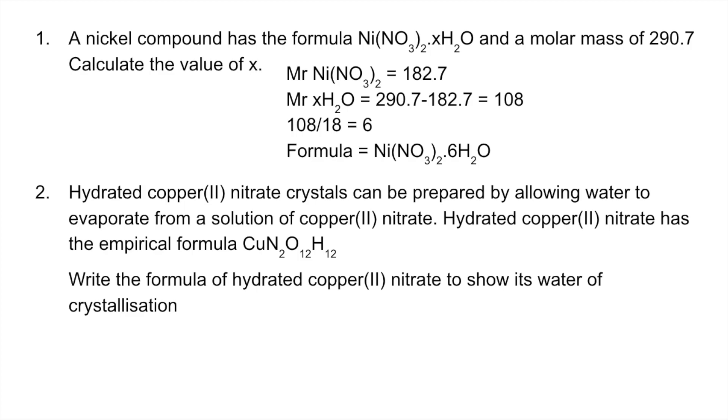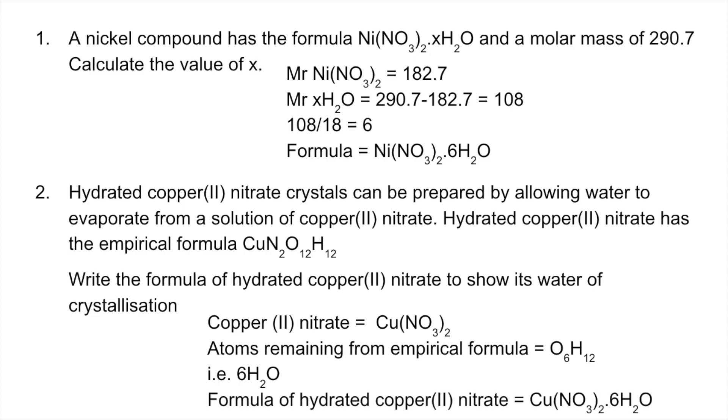The next one, the starting point is the formula of copper(II) nitrate, so Cu2+ and NO3-, so that's Cu(NO3)2. So if we subtract those atoms from the empirical formula we're left with O6H12, obviously that's six waters, and so the formula showing the water of crystallization is Cu(NO3)2·6H2O.